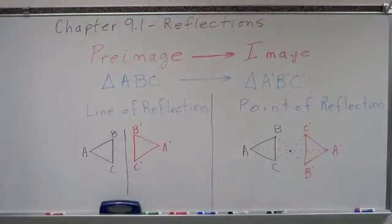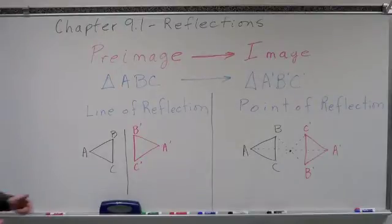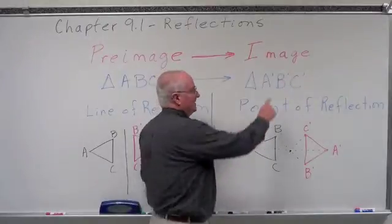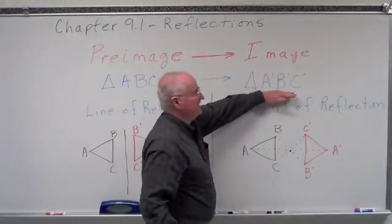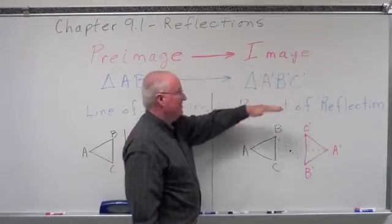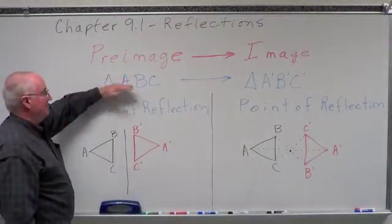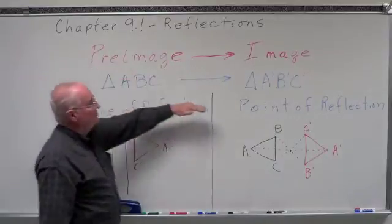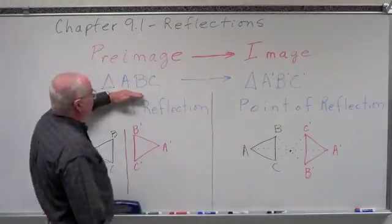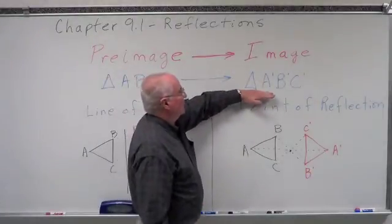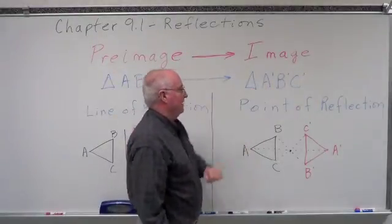Typically what's going to happen is — let's take triangle ABC and transform it into a new image: triangle A prime, B prime, C prime. Those little tick marks let me know this is the image after the change. Triangle ABC is the image before the change, or the pre-image. We always go from a pre-image to an image, and this is how it's going to be labeled.